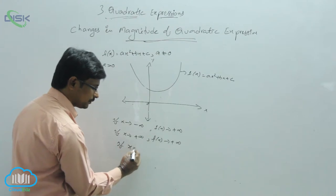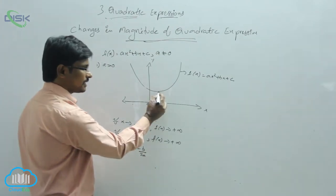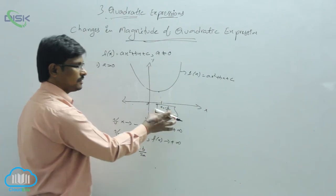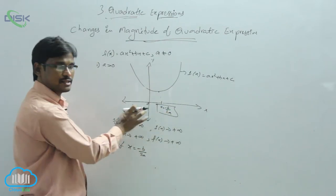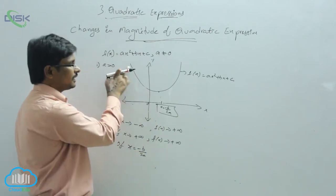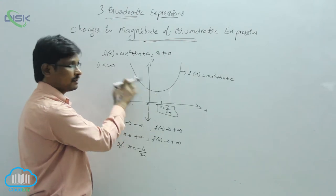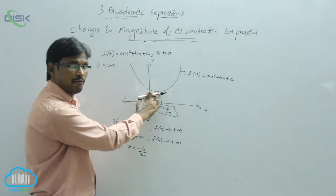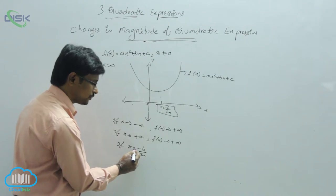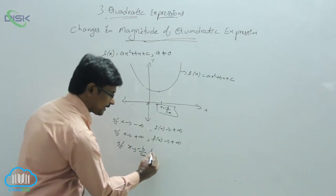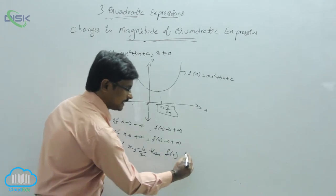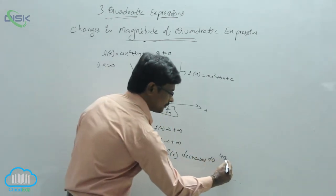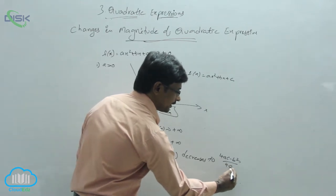Suppose x reaches minus b by 2a. We know that this is the absolute minimum value point, at x = −b/2a. As x decreases toward −b/2a, f(x) decreases to its absolute minimum value, which is (4ac − b²) / 4a.